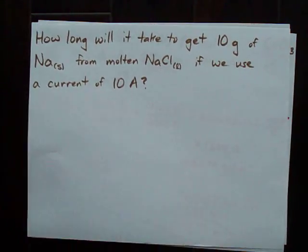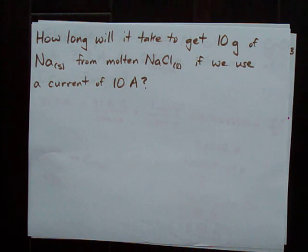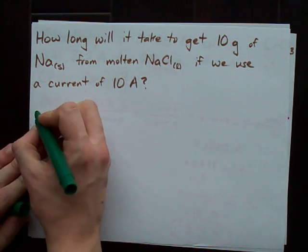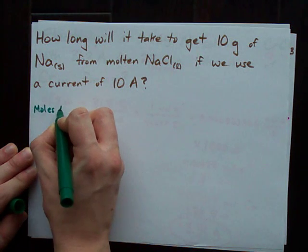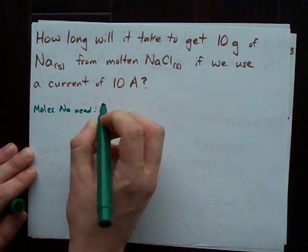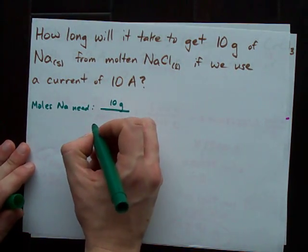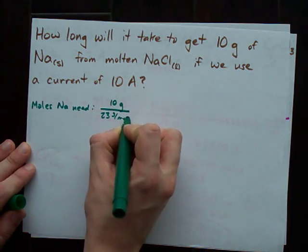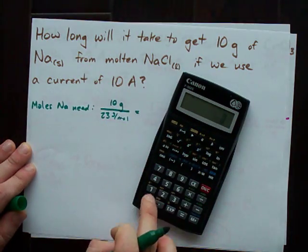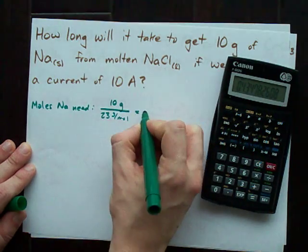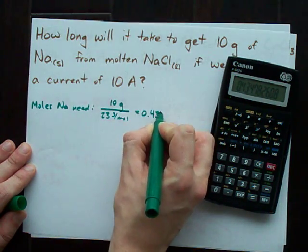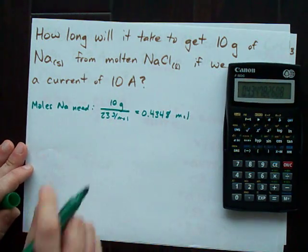Let's do another one of these. How long would it take to get 10 grams of sodium from molten NaCl if we use a 10-amp current? Well, my first question is, how many sodiums is 10 grams? The moles of sodium that I need are 10 grams divided by the molar mass of sodium, which is 23 grams per mole. That turns out to be 10 divided by 23 gives me 0.4348 moles of sodium that I need.